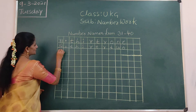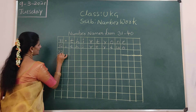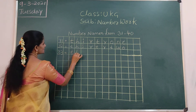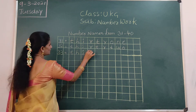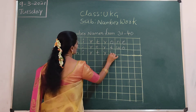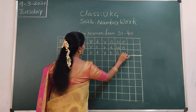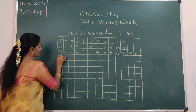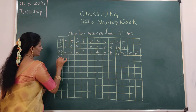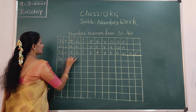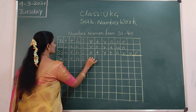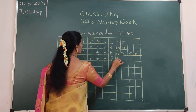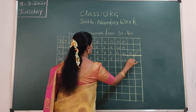Yes, 33 — THIRTY-THREE. T-H, I-R, T-Y, T-H, R-E-E. That is 33. Now 34 — THIRTY-FOUR. T-H, I-R, T-Y, F-O-U-R. 34.